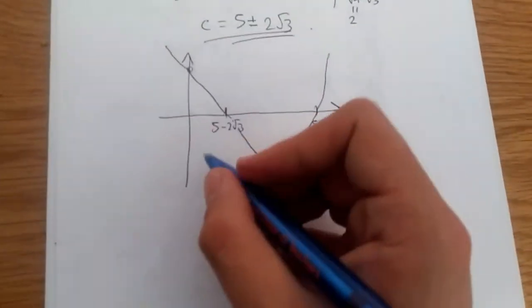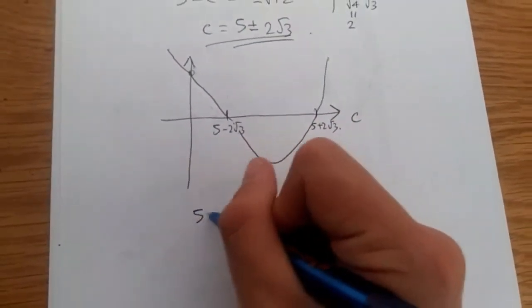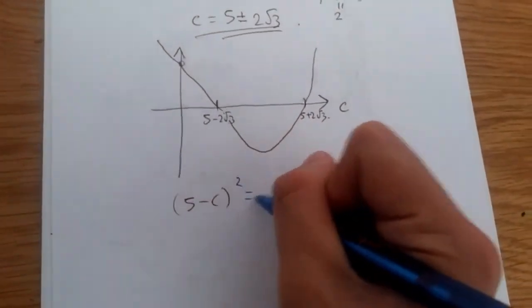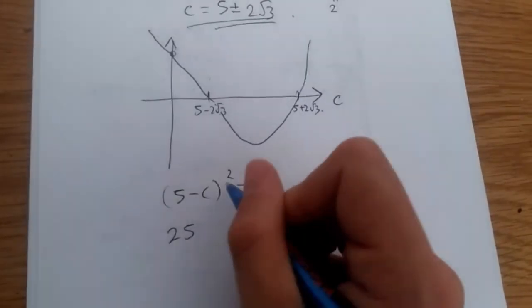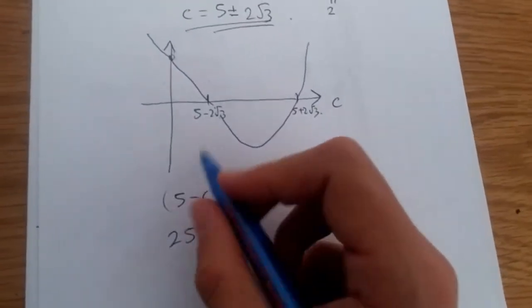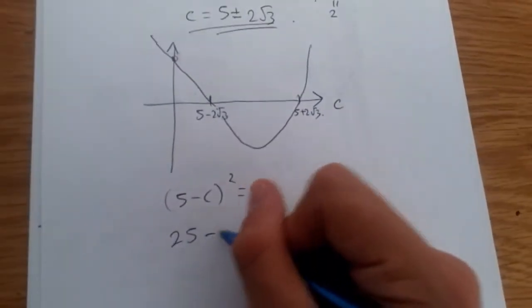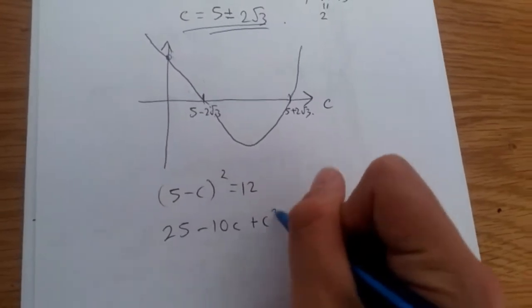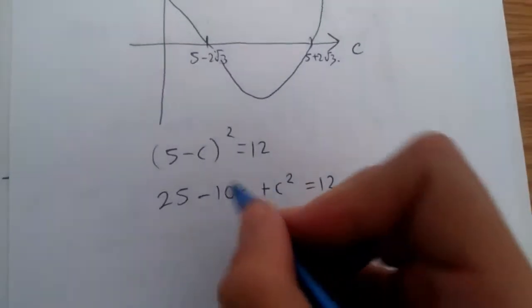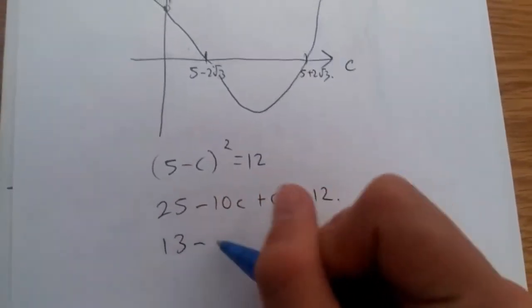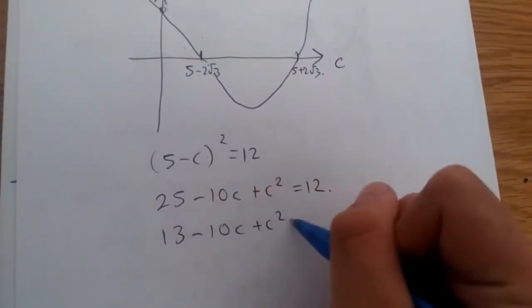And this is found by expanding this fully. So, let's expand this equation to find out what that value is. So, 5 minus c squared equals 12. Expanding this, what do we get? We should get 25 minus 10c plus c squared equals 12. And now, subtracting 12 across, we should get 13 minus 10c plus c squared equals 0.